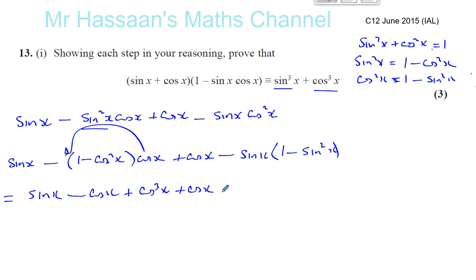Then you've got minus sin x. And you've got plus sin cubed x. So you've got sin x minus sin x. They disappear. Minus cos x and plus cos x, they disappear. So you're left with sin cubed x plus cos cubed x. So there we have 13 part 1.